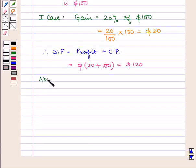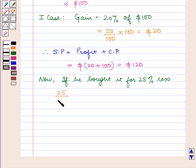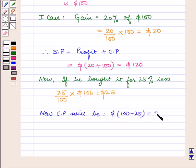Now, if he bought it for 25% less, 25% of $100 equals $25. So the new CP will be $100 - $25 = $75.